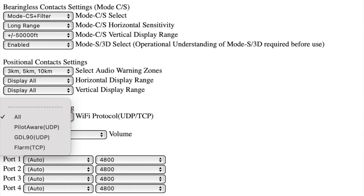This next tab is very important and selects the protocol that you are going to use to connect to your external flight bag. An external flight bag is a generic term for applications such as EasyVFR or SkyDaemon. Each electronic flight bag has its own specific protocol that needs to be inserted here. For example, when using SkyDaemon it is very important that you use PilotAware UDP to ensure you don't get inter-device lockout.